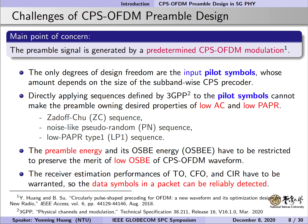Considering that the preamble signal is generated by a predetermined CPS-OFDM modulation, there are some design challenges. First, the degrees of freedom are the input pilot symbols to be fed into the subband-wise CPS precoder, and the amount of design variables is actually limited. Second, directly applying Zadoff-Chu sequences, pseudo-random sequences, and low PAPR sequences defined in the 3GPP specification cannot make the preamble low autocorrelation and low PAPR. The third concern is that given fixed preamble energy, the out-of-subband emission energy (OSBE) has to be restricted to preserve the merit of the CPS-OFDM waveform. The last concern is to guarantee the estimation performances of TO, CFO, and channel, so that the data symbols in a packet can be reliably detected.